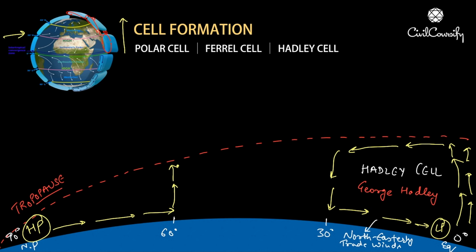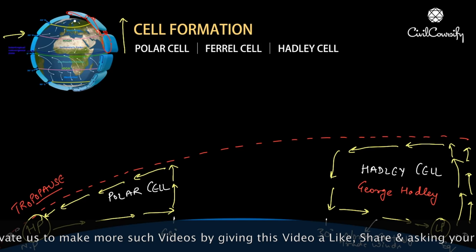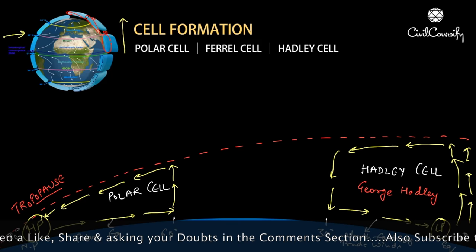After rising to the tropopause at 60 degrees, the air will try to diverge — part going in one direction and part in the other. Looking at the pole-ward part, it moves in that direction and tries to subside at the poles, completing a cycle. This cell is called the polar cell. The surface winds in this cell, as you can see, are known as the polar easterlies.